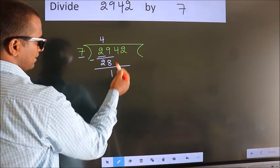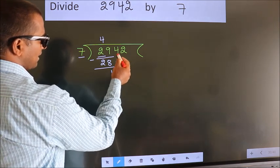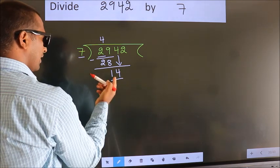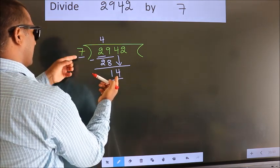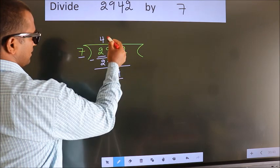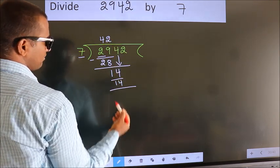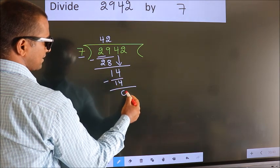After this, bring down the beside number. So 4 down. So 14. When do we get 14? In 7 table, 7 twos, 14. Now we subtract. We get 0.